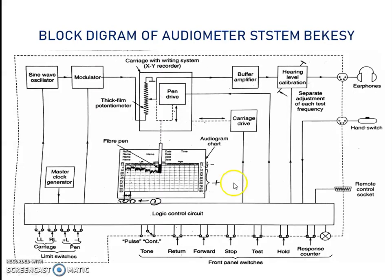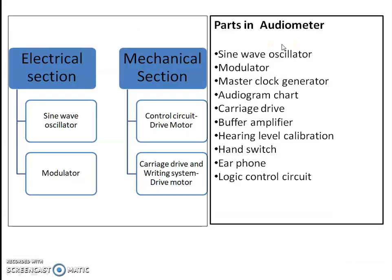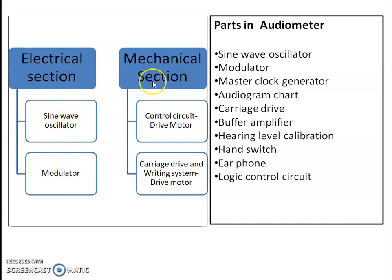Now we will discuss the block diagram of the audiometer system. This system is divided into two sections: electrical section and mechanical section. The electrical section consists of a sine wave oscillator and modulator to generate the desired test signal. The mechanical section consists of a control circuit, carriage drive, and writing system with drive motor. These are all the parts in the audiometer.